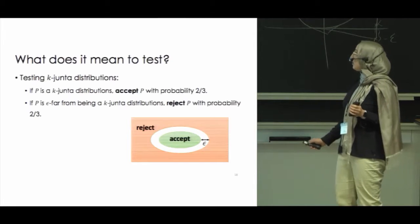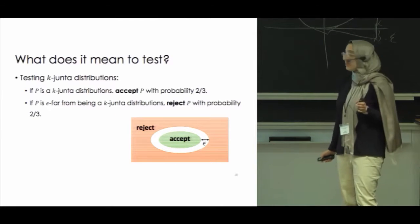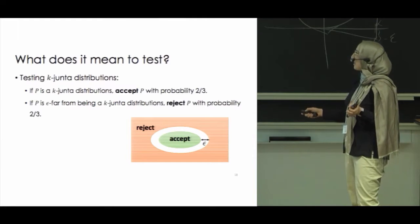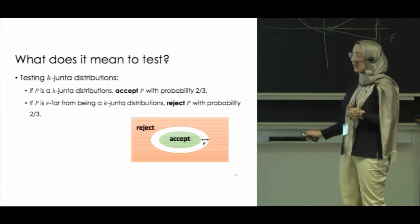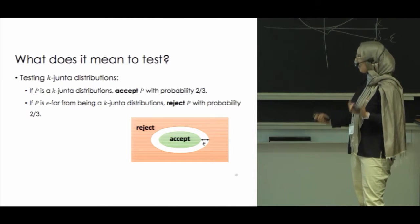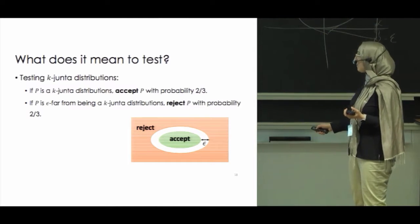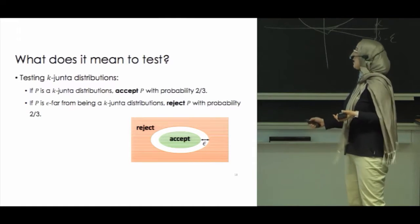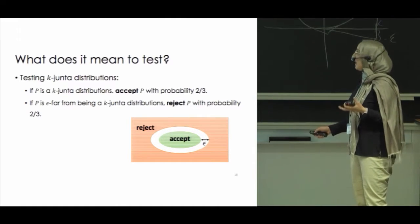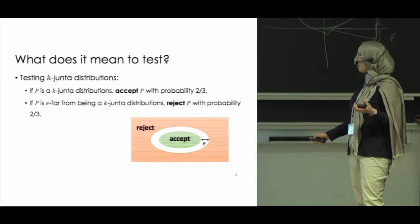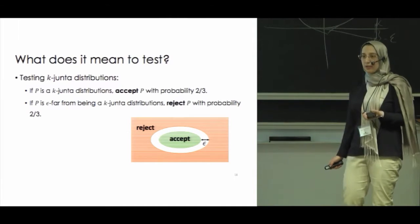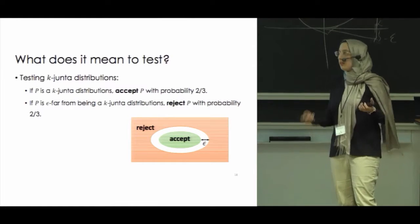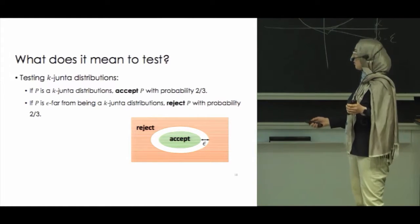Now I'm going to explain the testing algorithm. An epsilon tester for a k-junta distribution is an algorithm that accepts any k-junta distribution with probability at least two-thirds, and rejects any distribution that is epsilon far from being a k-junta distribution. In the gray area in between, it is okay to either accept or reject.